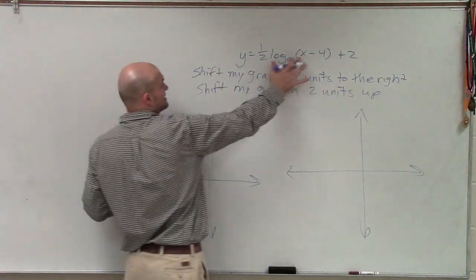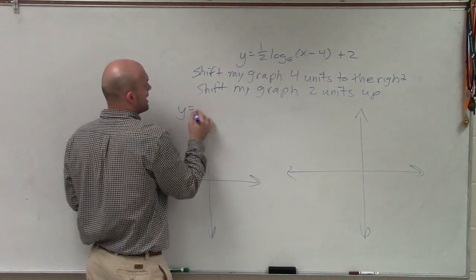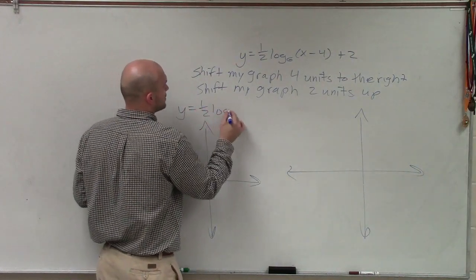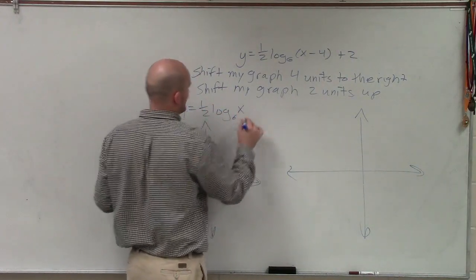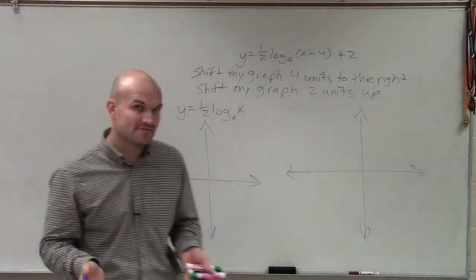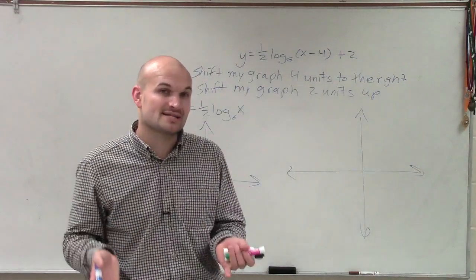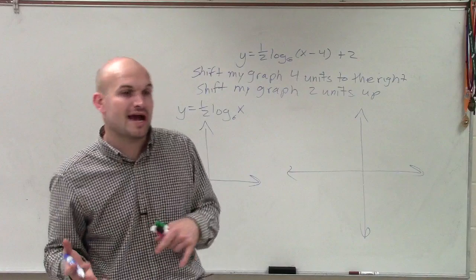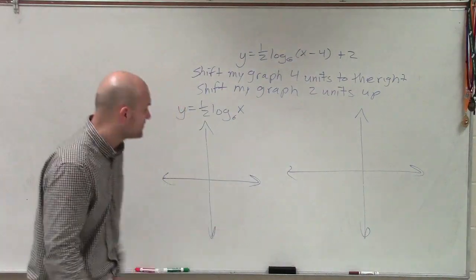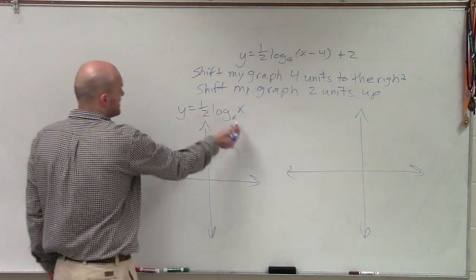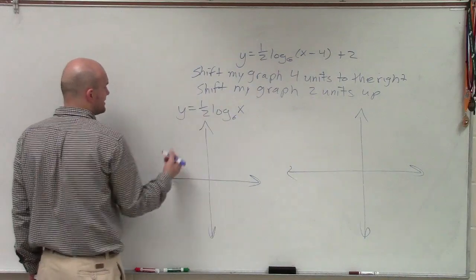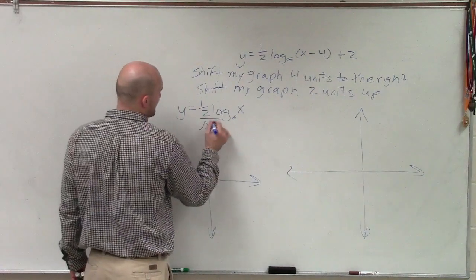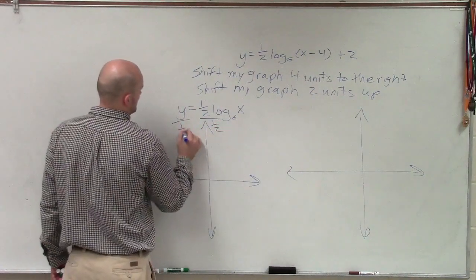So our parent function, again, we're just going to take this without the transformations. It would be y equals 1½ log base 6 of x. Now, you can do it without the 1½ and then just take those points and multiply them by your x values by 1½ if you want to. But I like to leave this in here because when I rewrite this in exponential form, what I like to do is divide by 1½.